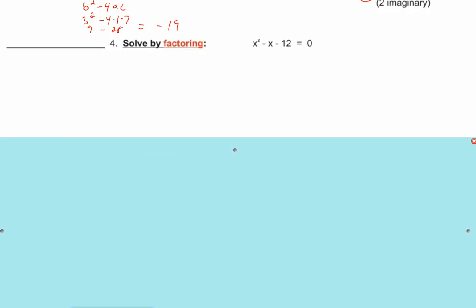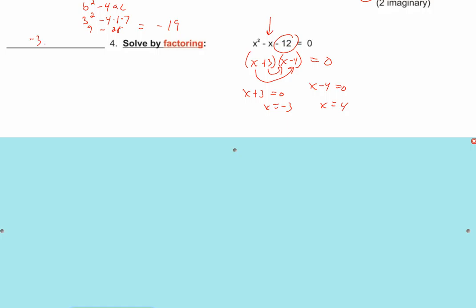Do number four — make sure you solve it the way I say to solve it. It's already set equal to zero; if it wasn't, you would set it equal to zero. My back number is negative 12. I've got 12 and 1, 4 and 3, 2 and 6, but I know I'm after negative 1 in the middle — how about negative 4 and positive 3? The outers plus the inners gives me that negative x. Set each factor equal to zero and solve: x equals negative 3 is one solution, and x equals 4 is the other. That is the easiest solve-by-factoring problem I could give you.